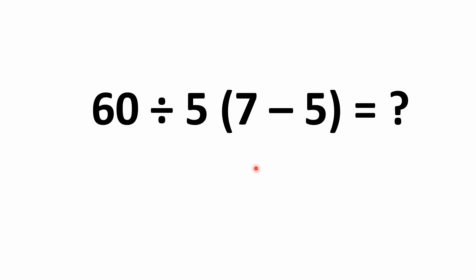Hello, everybody, and welcome back to the Math Puzzle Crash Course. We have another viral problem, one that's shown up on the internet and been debated back and forth a lot. It's 60 divided by 5 multiplied by the quantity 7 minus 5. The number 5 you see outside of the parentheses represents what's called implicit multiplication — it's implied that we're multiplying 5 by what's inside the parentheses.